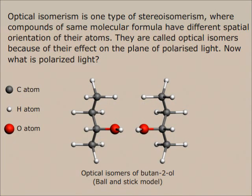Optical isomerism is one type of stereo isomerism where compounds of the same molecular formula have different spatial orientation of their atoms. They are called optical isomers because of their effect on the plane of polarized light.